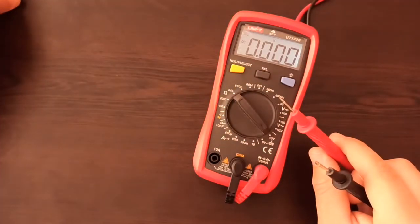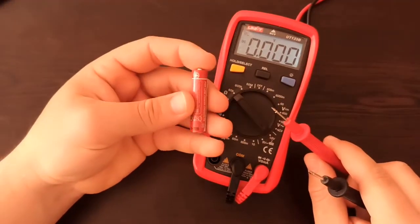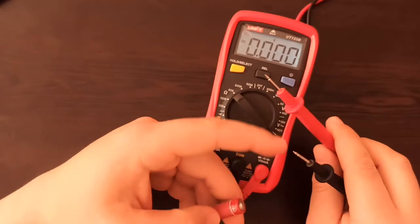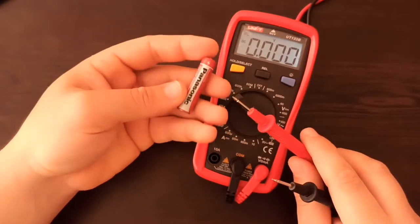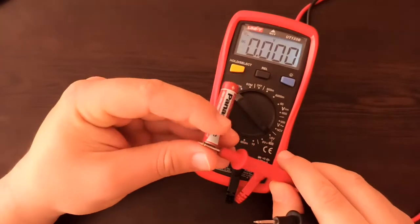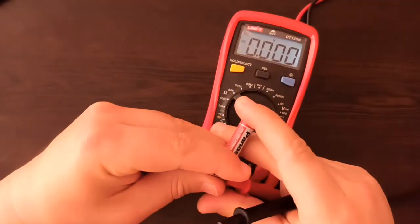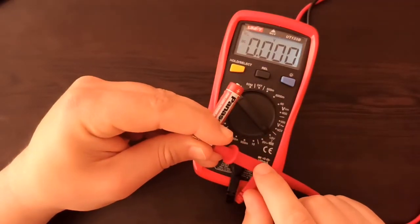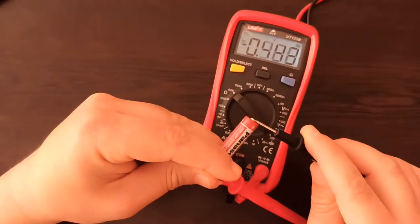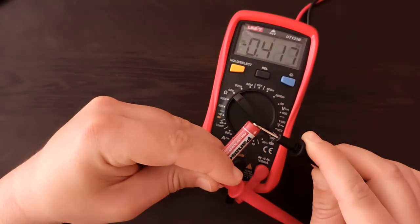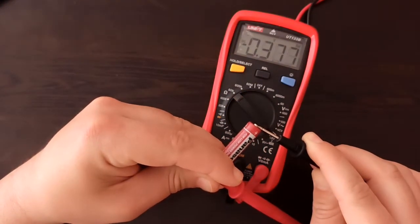I also wanted to show you—if you reverse the probes when measuring DC voltage, if I put the red wire, the positive wire, on the minus and the common wire on the positive side, on the plus, it's showing the value again but with the minus sign. So it doesn't really matter; it's just showing that the polarity is wrong on the display.